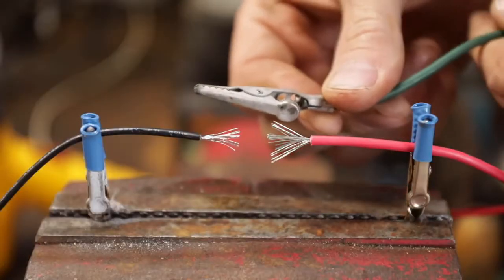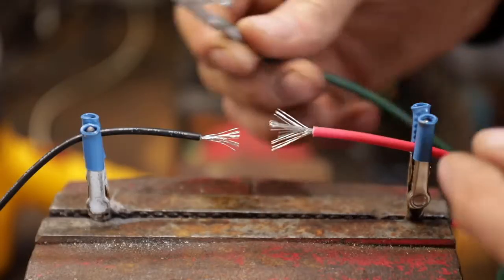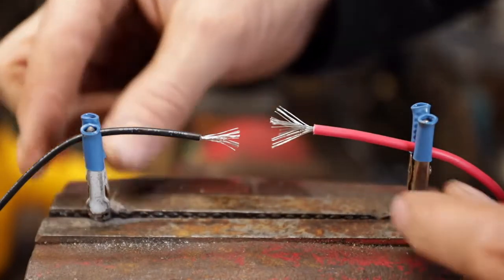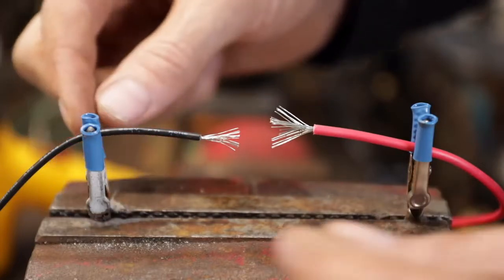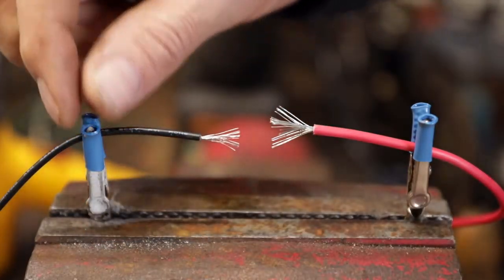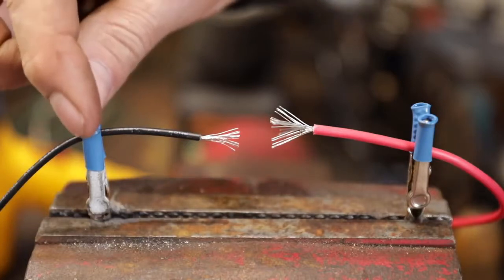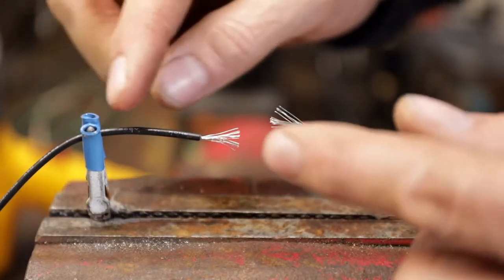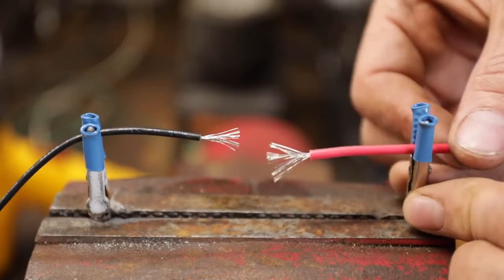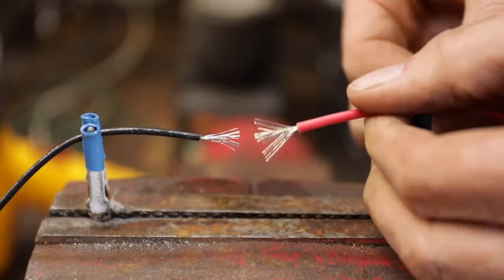Do yourself a favor and get a couple of alligator clips. You don't have to have those fancy stands if you're just doing this once in a while. Take two alligator clips and clamp them in your vise. Take some shrink tubing and melt it on the clips so they won't mess up your wire. This will hold things securely and you'll get a better job.